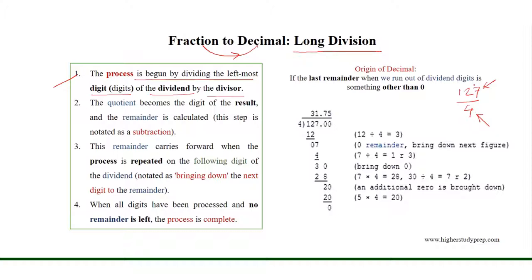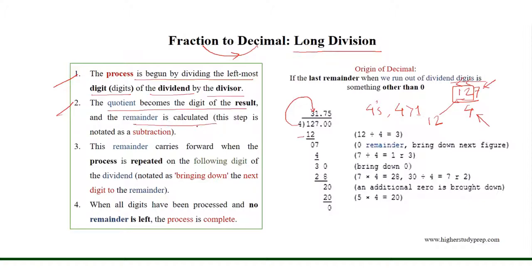Now if we consider the leftmost digit, 1, and ask how many 4s will go into 1, the answer is none because 4 is greater than 1. Thus we need to consider the leftmost 2 digits, which form the number 12. Now, 4 will go 3 times into 12, and we can get 3 as the quotient, which is the first digit of the result. The remainder is calculated by subtraction: 12 minus 12 results in 0.